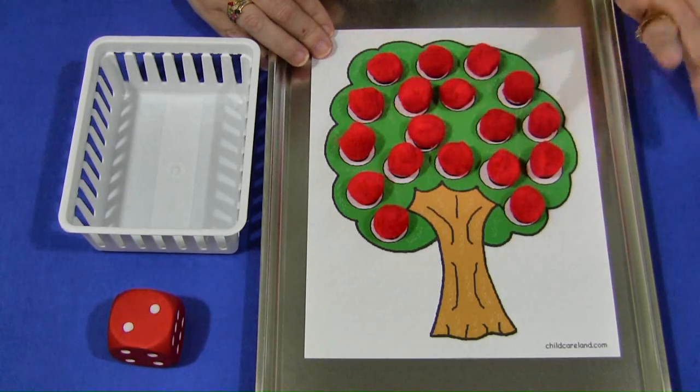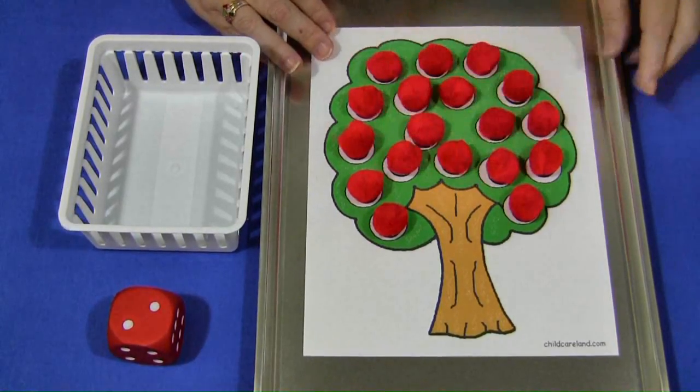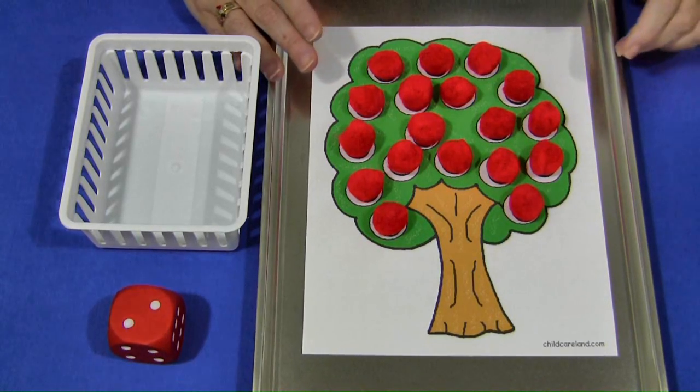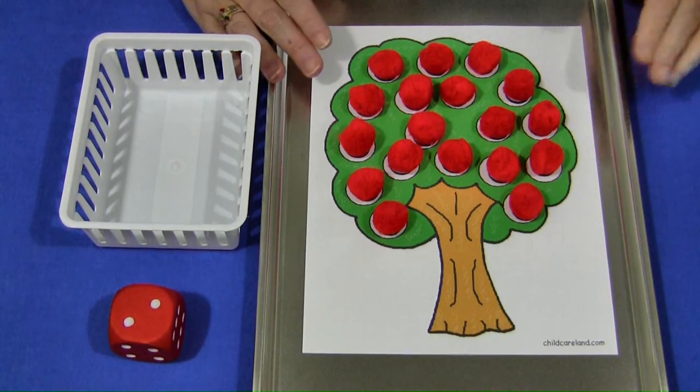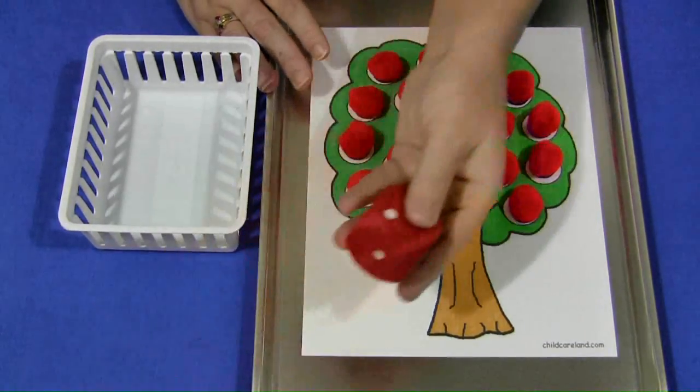But I just like the pom-poms. They're more tactile and give it a nice 3D look for the kids. You would start out with all the apples on the tree. This could be done as an individual activity or as a group game where children take turns rolling the dice.